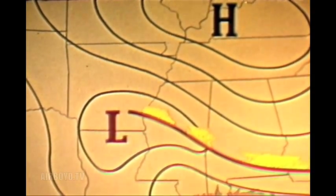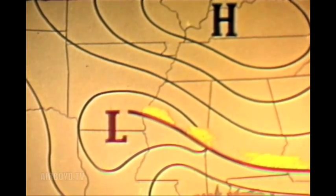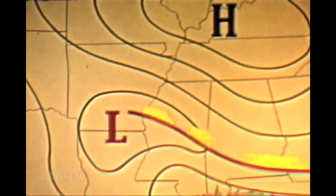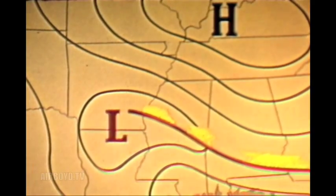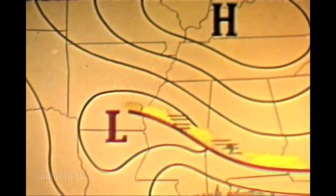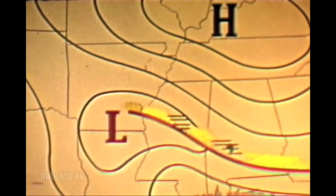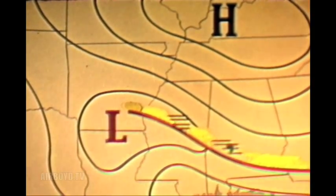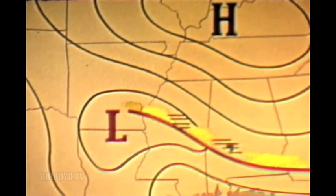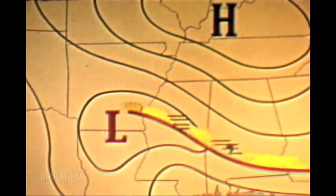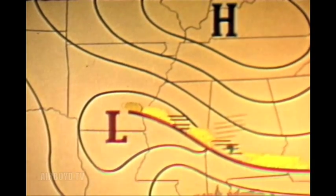Usually the warm air has not been lifted enough to cause much precipitation, but occasionally rain and drizzle are found in this area. Further ahead of the front is the portion of the nimbostratus cloud layer with temperatures above freezing, which produces rain or drizzle.